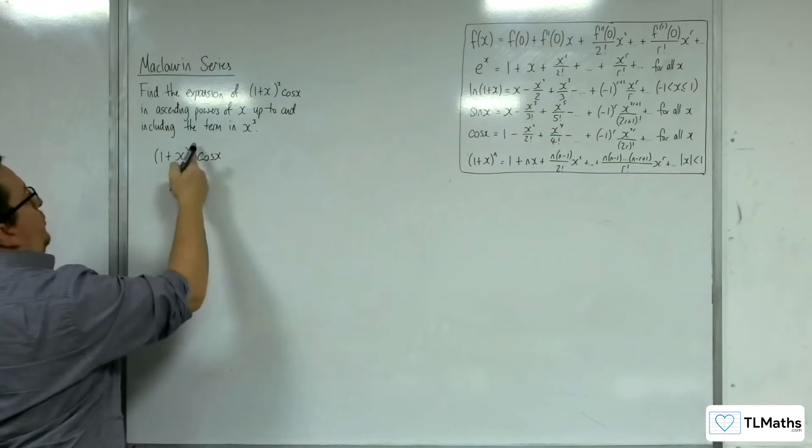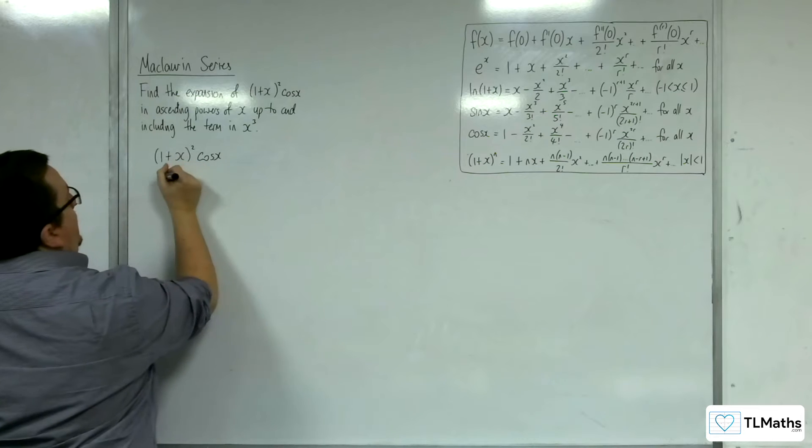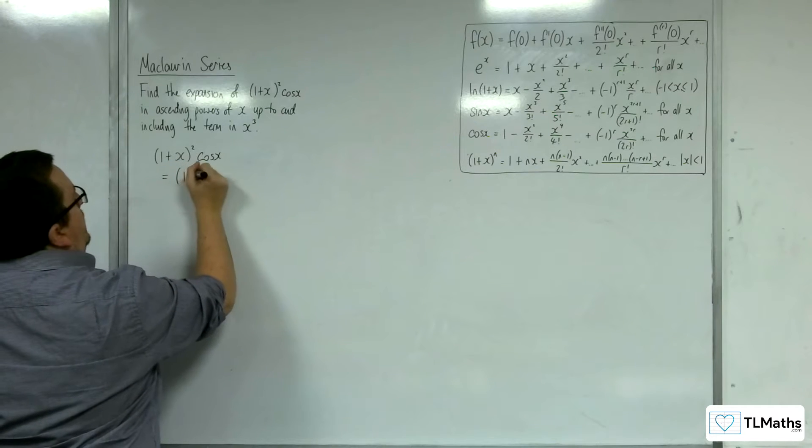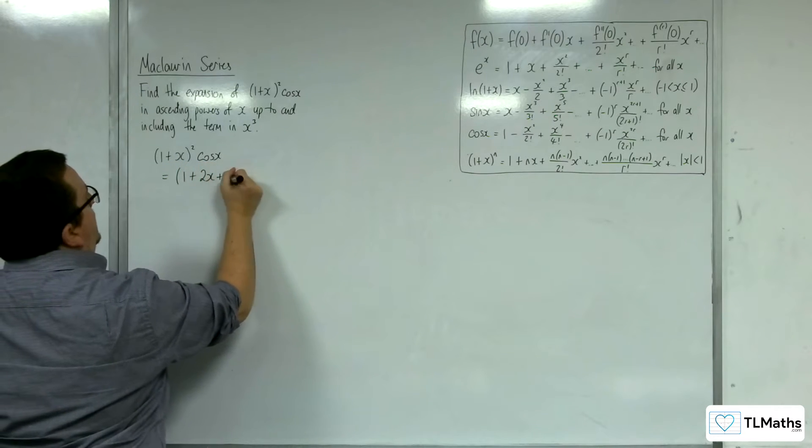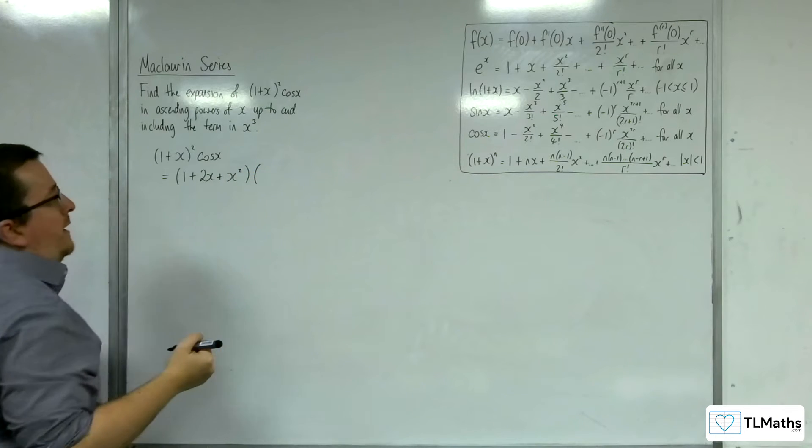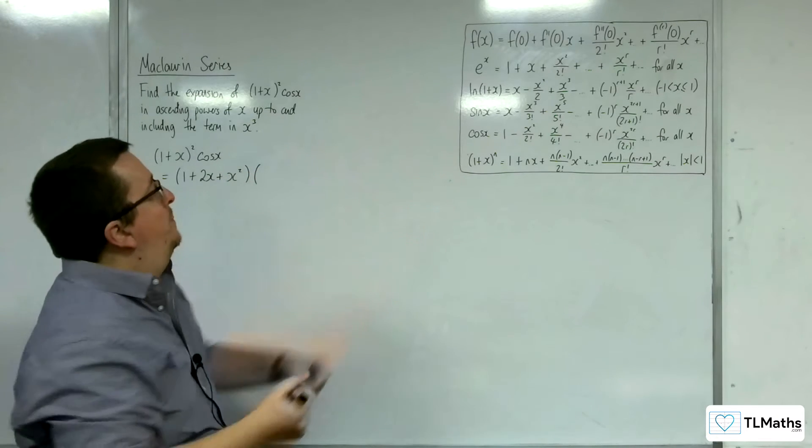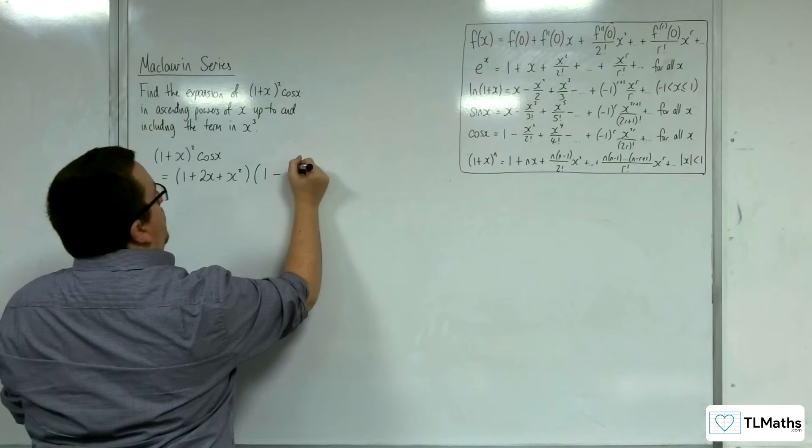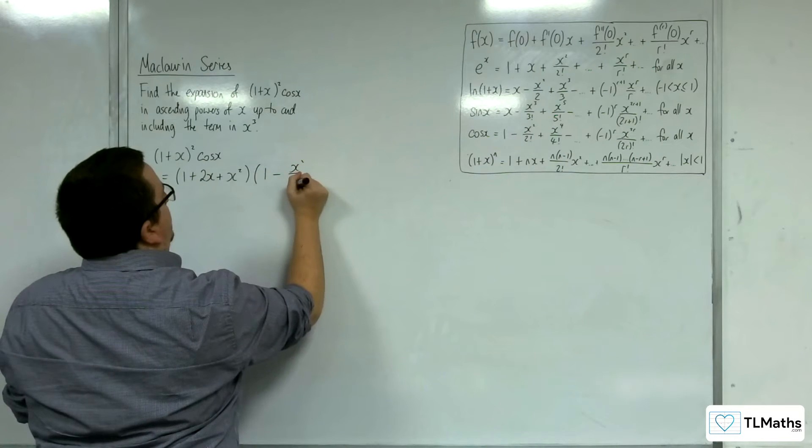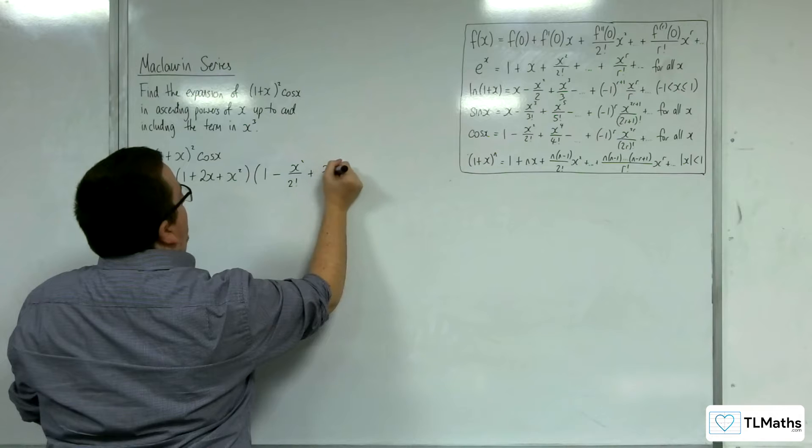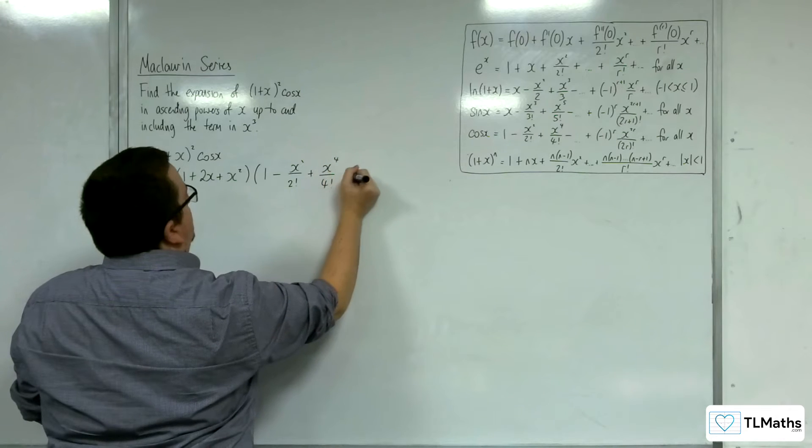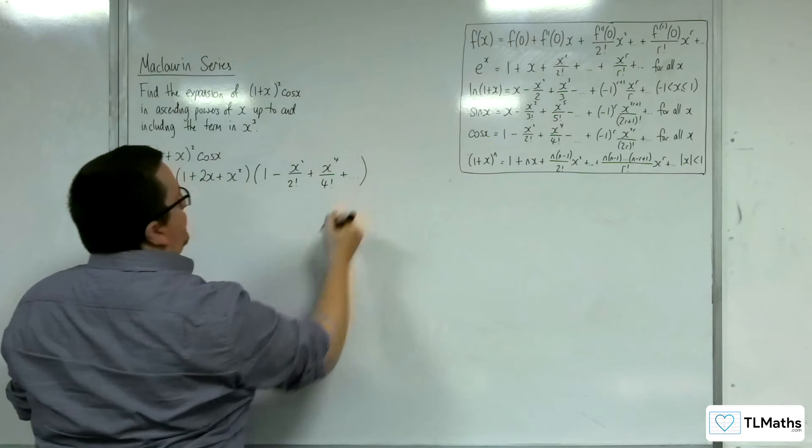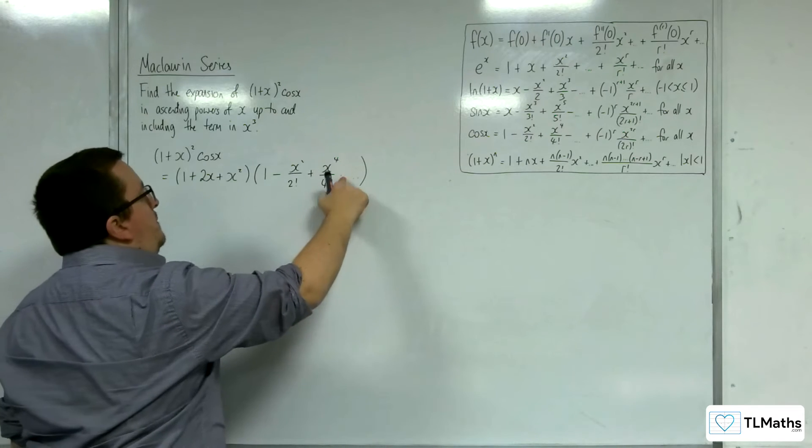So 1 plus x all squared times cosine x is equal to 1 plus 2x plus x squared times cosine x, which has this expansion. So 1 take away x squared over 2 factorial plus x to the 4 over 4 factorial, etc. The next one's going to be minus.